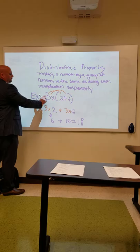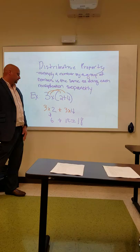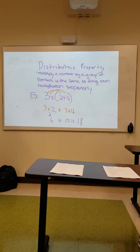3 times 2 plus 4 is 3 times 2, and you can also distribute 3 times 4. So you get 3 times 2 is 6, and 3 times 4 is 12. The same thing as adding 2 plus 4 is 6, 3 times 6 is 18, 6 plus 12 is 18.